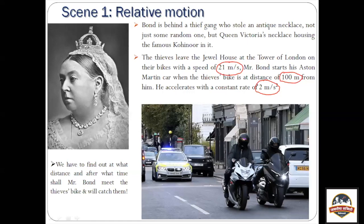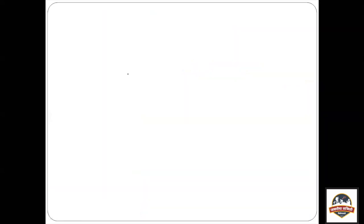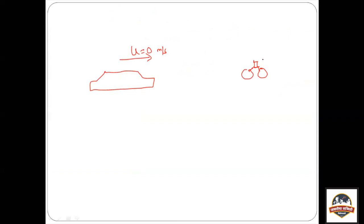To tackle this problem, the distance between the bike and the car is 100 meters. Bond starts with an initial velocity of 0 meters per second, while the bikes are moving at 21 meters per second — a constant speed. The speed of James Bond's car is not constant but increasing with an acceleration of 2 meters per second squared.